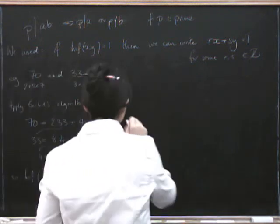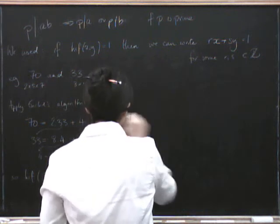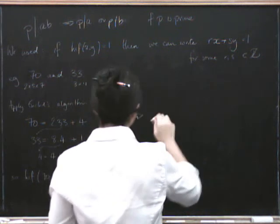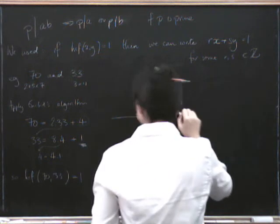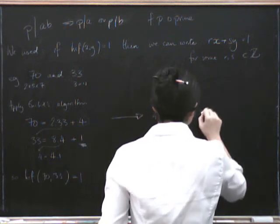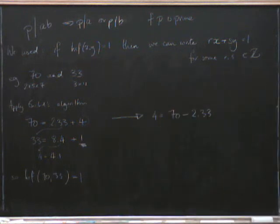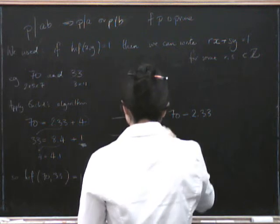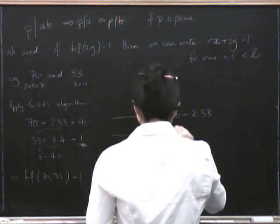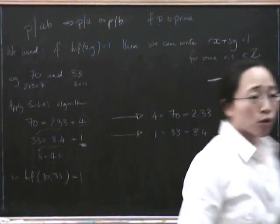So if we start at the top, we feed the numbers back in, right? So this line, we turn it around and we get 4 equals 70 minus 2 times 33. Now from this line, we get that 1 equals 33 minus 8 times 4.